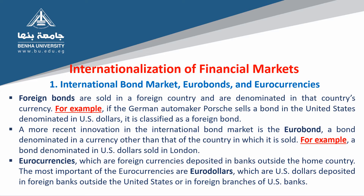Internationalization of financial markets: Foreign bonds are sold in a foreign country and are denominated in that country's currency. For example, if the German automaker Porsche sells a bond in the United States denominated in US dollars, it is classified as a foreign bond. A more recent innovation in the international bond market is the eurobond — a bond denominated in a currency other than that of the country in which it is sold, for example, a bond denominated in US dollars sold in London.